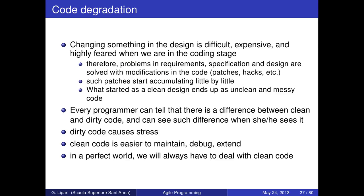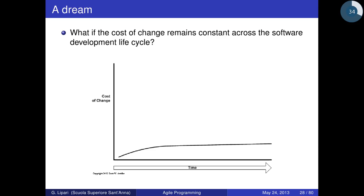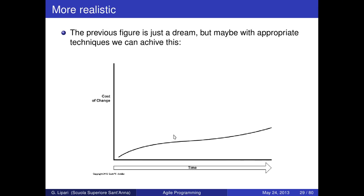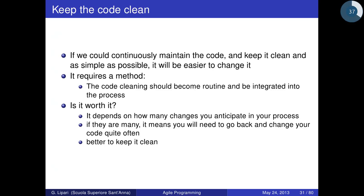Every programmer can tell the difference between clean and dirty code. Dirty code causes stress, while clean code is easier to maintain, debug, and extend. In a perfect world we would always deal with clean code. No programmer wants to deal with huge functions. The dream is: what if the cost of change remained constant across the software development lifecycle? Of course that's not very realistic, but what if it were at least very small and only slightly increasing over time?